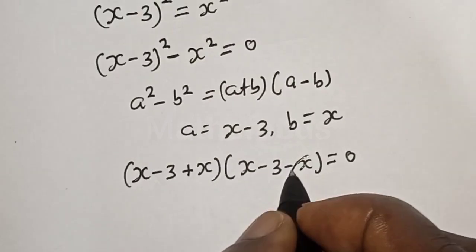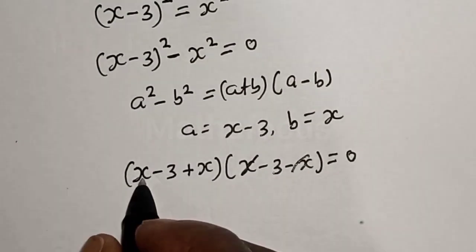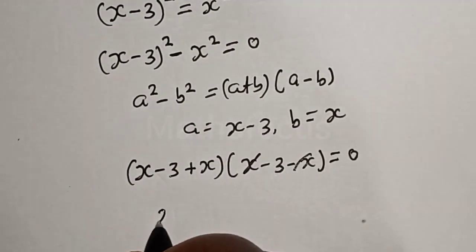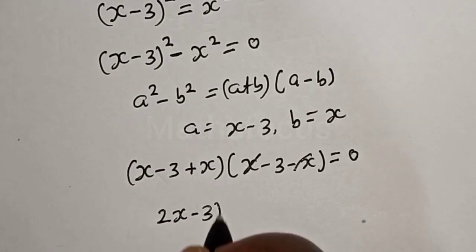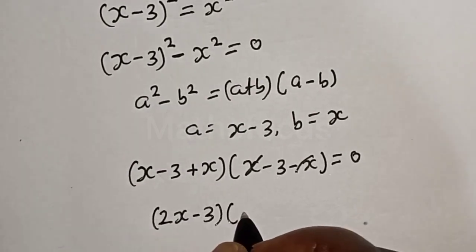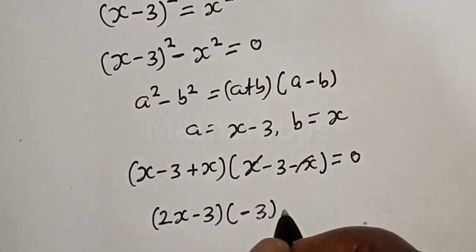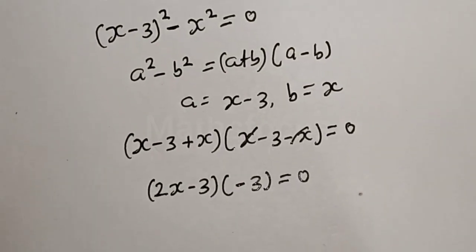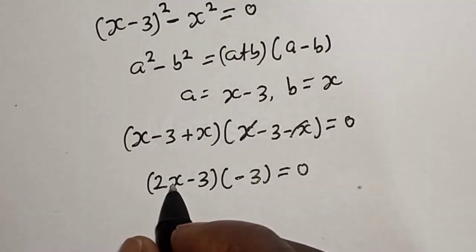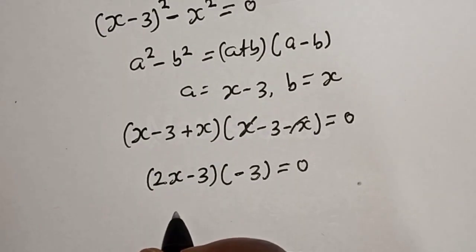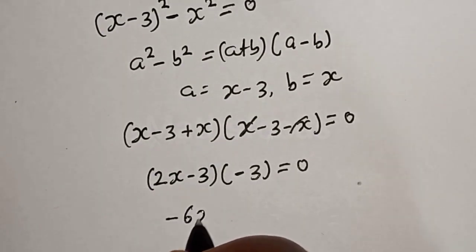This will cancel this. We have x plus x, this is 2x minus 3, multiplied by minus 3 is equal to zero. Then let's open this bracket. 2x times minus 3, this is minus 6x.